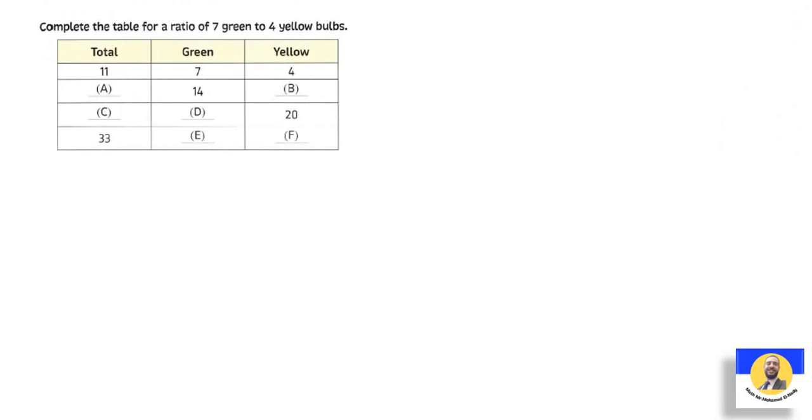Complete the table for a ratio of 7 green to 4 yellow. 7 green to 4 yellow. When did it happen? 7 becomes 14, so by 2. 4 by 2 equals 8, and 11 by 2 is 22. I did 7 by 5 equals 35, and 11 by 5 equals 55. The next: 11 becomes 33, means by 3. So 7 by 3 is 21, and 4 by 3 is 12.